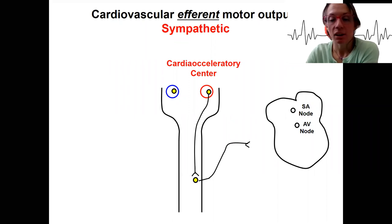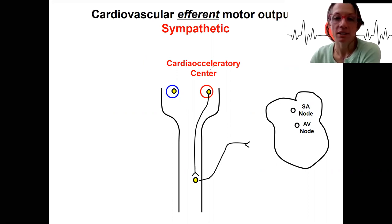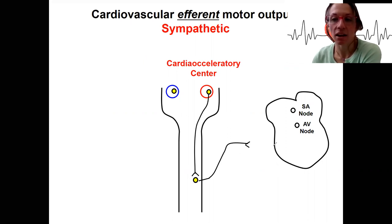We're back here again. Sympathetic motor outputs — efferent motor outputs. Efferent means motor. And so the sympathetic division's cardioacceleratory center is going to ultimately contact the SA and AV node to increase heart rate.